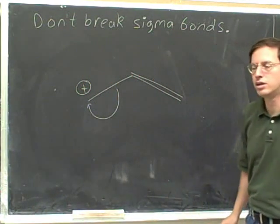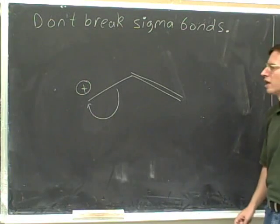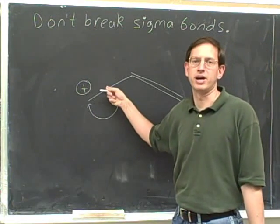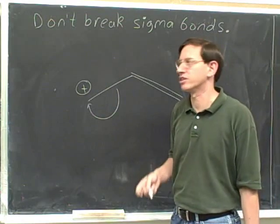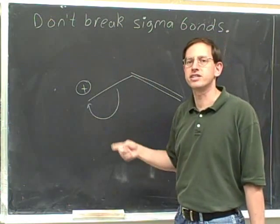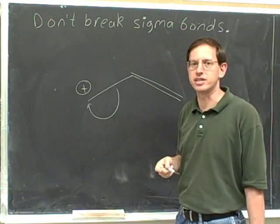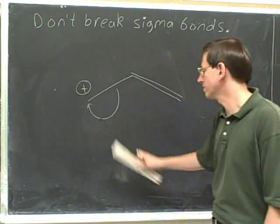Is this arrow legal? No, because the tail is on a single bond. You're not allowed to have the tail on a single bond — for resonance, that's illegal.